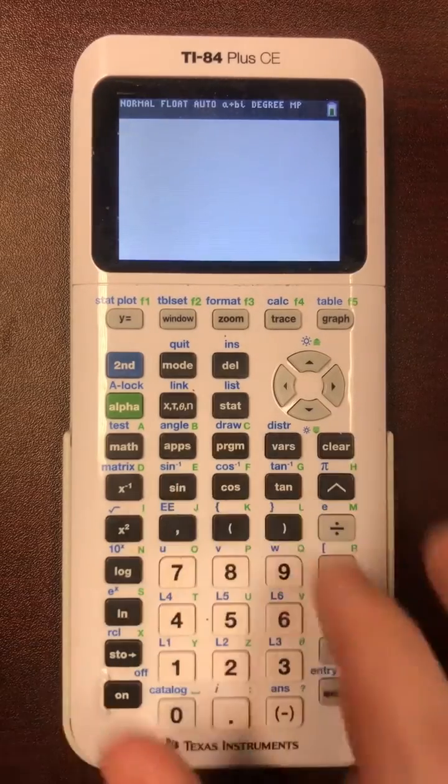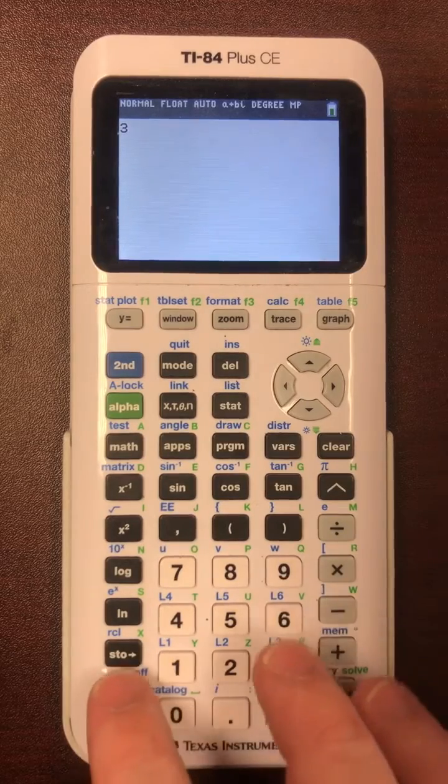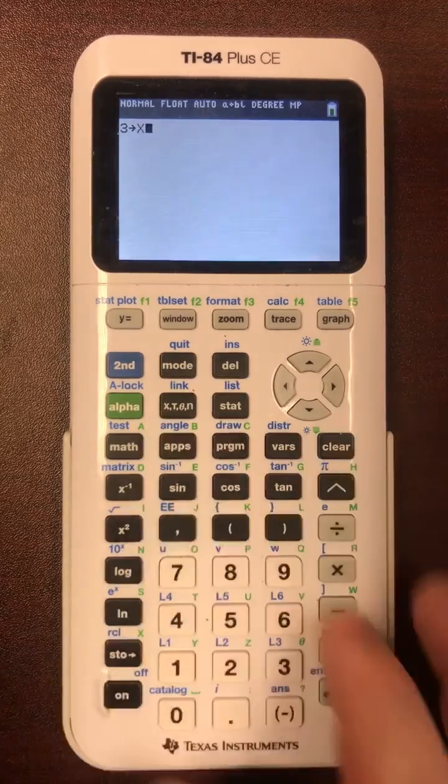For the sake of argument, let's decide to store x as 3. So we type in 3, then hit the STO button, and then hit x.